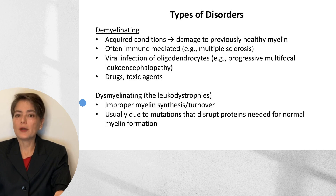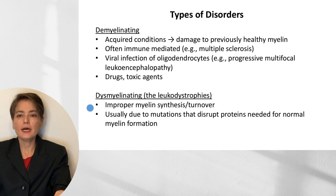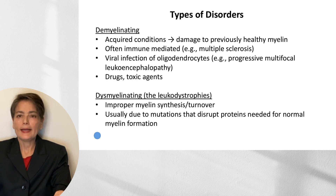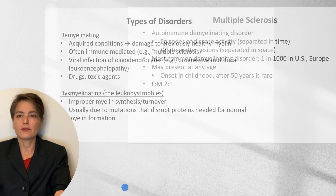This is in contrast to our dysmyelinating disorders, which include the leukodystrophies. What we see in these conditions is improper myelin synthesis and turnover, and it's usually due to mutations that disrupt proteins needed for normal myelin function. Unlike our demyelinating disorders, they tend to present at a very early age.